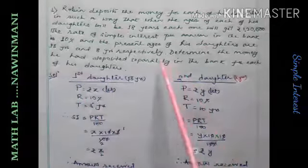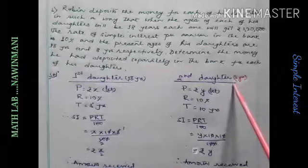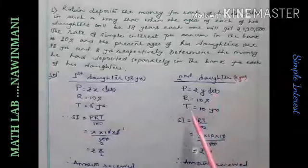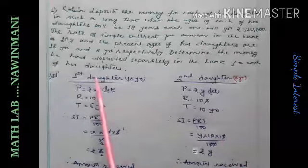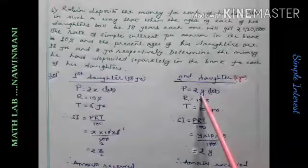And for the second daughter, her age is 8 years. And for the second daughter, the time will be 10 years. So, first daughter is X rupees, second daughter is Y rupees.